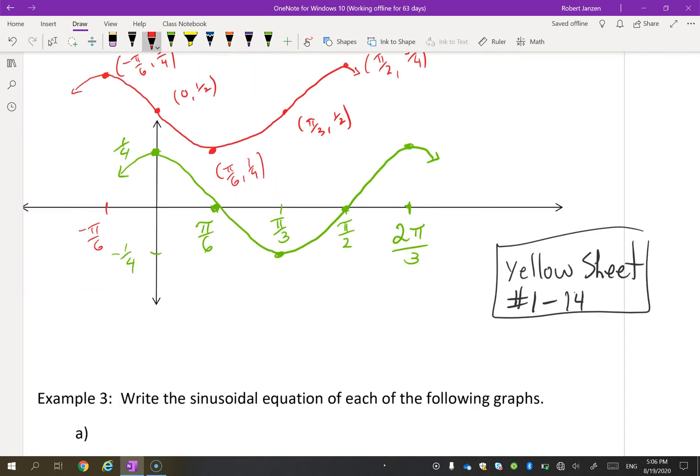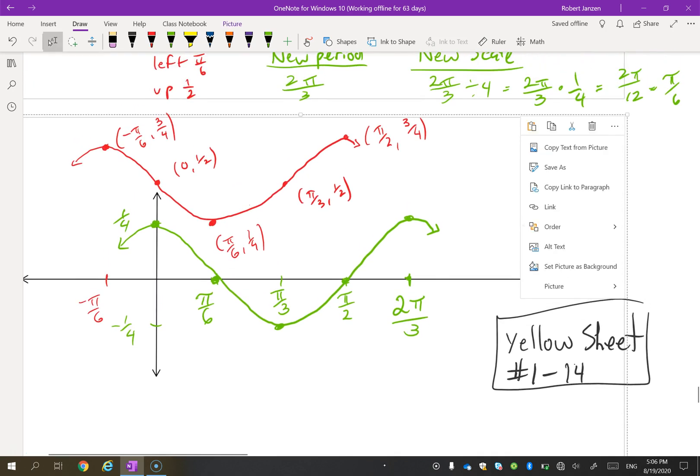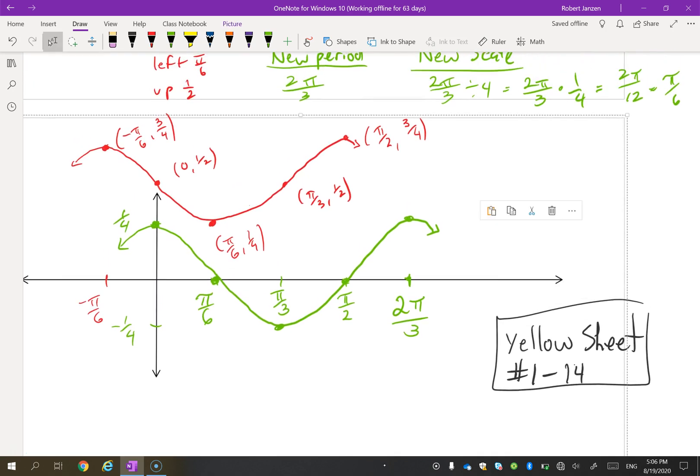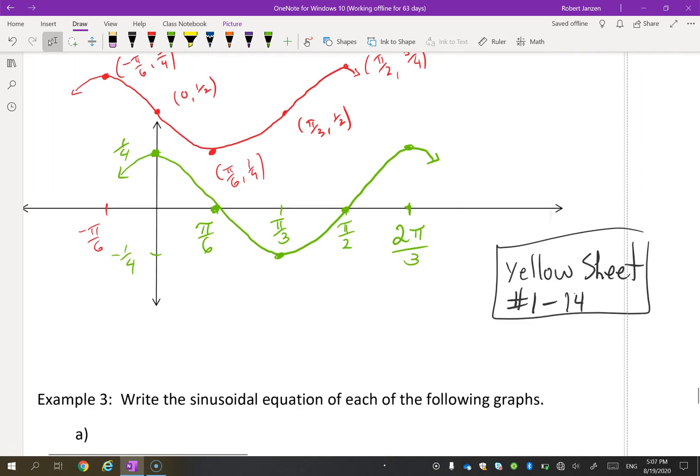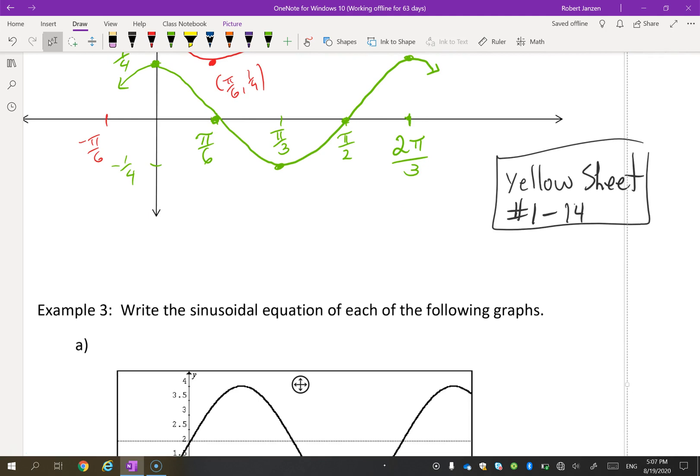Alright? Your homework on the handout, the yellow sheets. There are 14 graphs. Now you're going to notice some of them are in degrees. How would that change things? Well, the only thing that's going to change is when you do your period, instead of using 2π, you're going to use 360. So you divide 360 by b. So try those. Please ask if you get stuck on them. Alright?